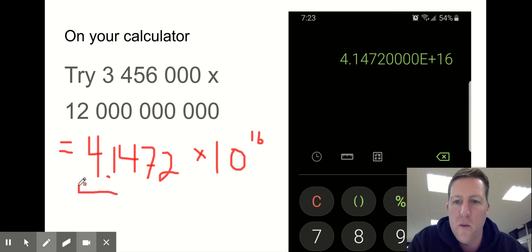And if you look at the way that they've written it, this number is between 1 and 10, 4.14. It's almost halfway, right? 4.1472 times 10 to the power of some number. And in this case, it's positive 16. And they've showed that there on the calculator like that.